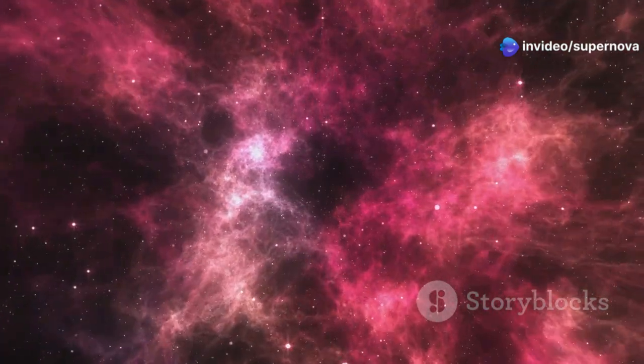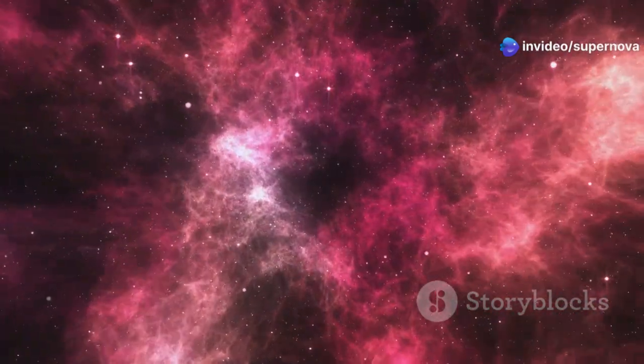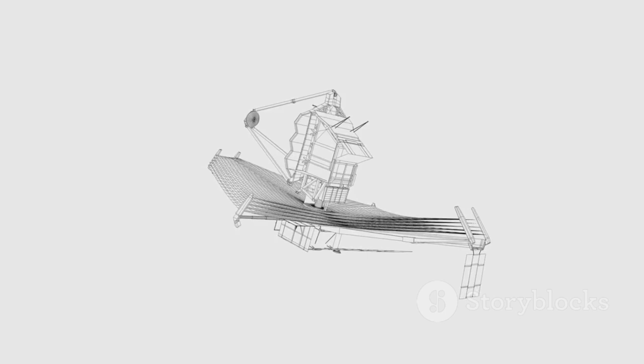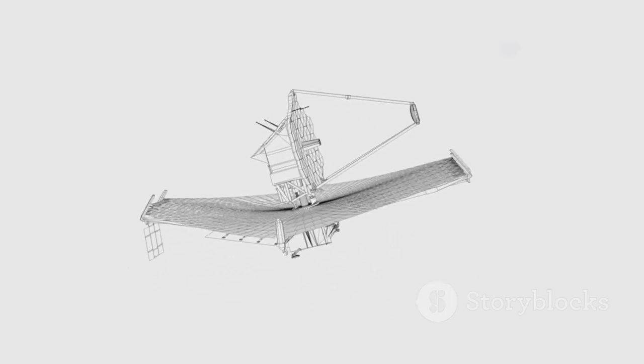Infrared light can also penetrate clouds of gas and dust that obscure our view in visible light. This allows JWST to see objects and events hidden from previous telescopes like the Hubble Space Telescope.